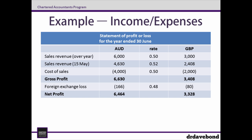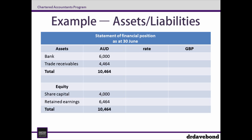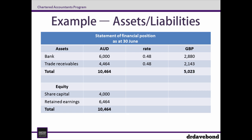Now that we've dealt with the statement of profit or loss, it's time to turn to the statement of financial position. Assets use the closing rate. Liabilities do as well, but we don't have any here. Again, total assets is a subtotal, so no rate is required — just add up the lines above. There is no explicit guidance for the two equity line items, but the common process is to use a spot rate for when the share capital was originally recognised. Using the rate on the date of incorporation, the 1st of July, we get share capital totalling £1,880.